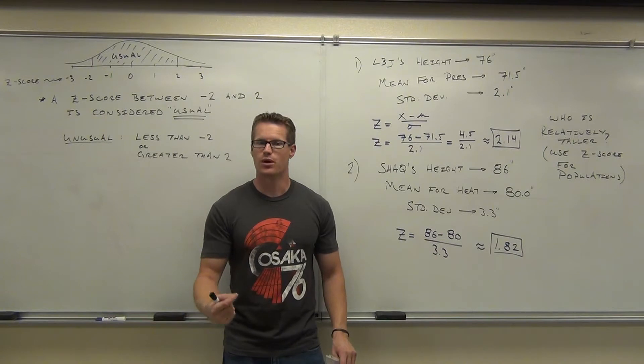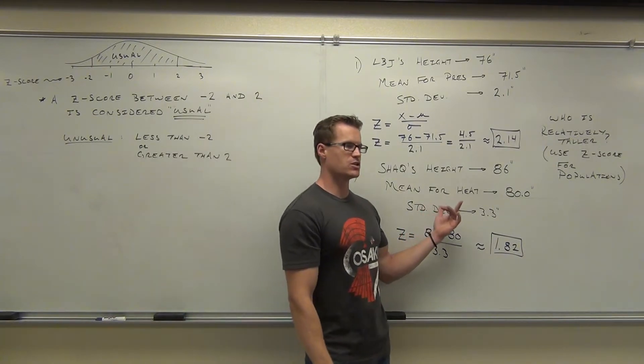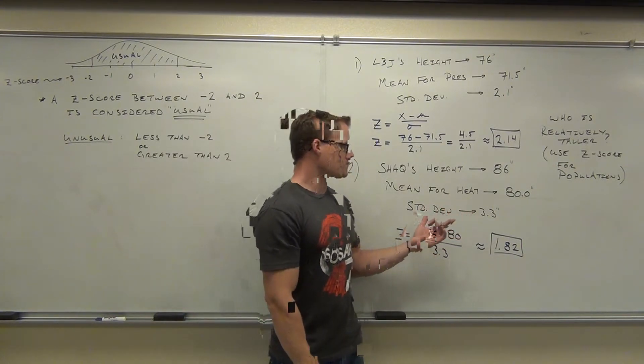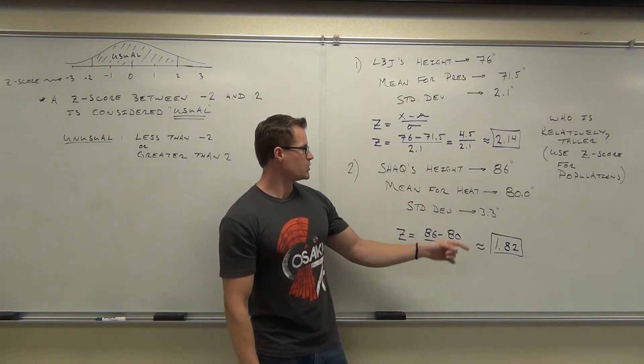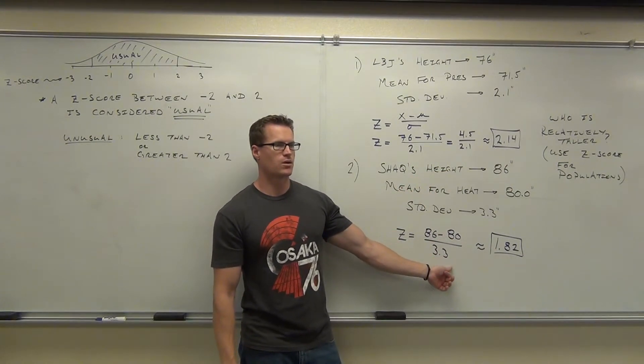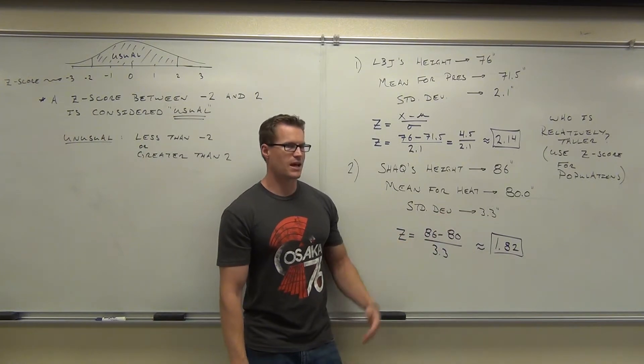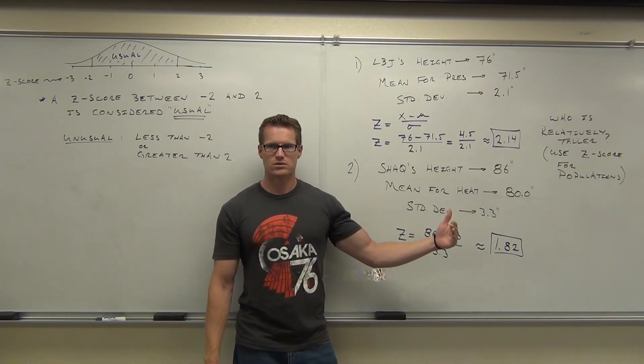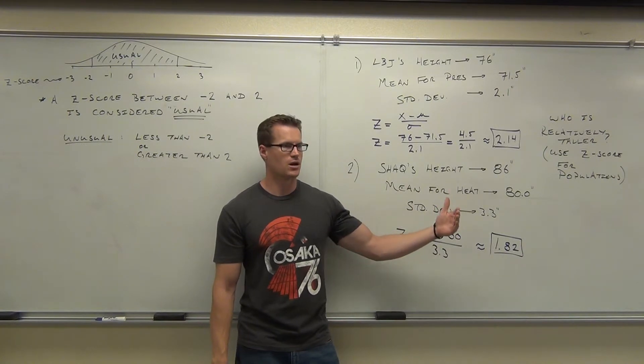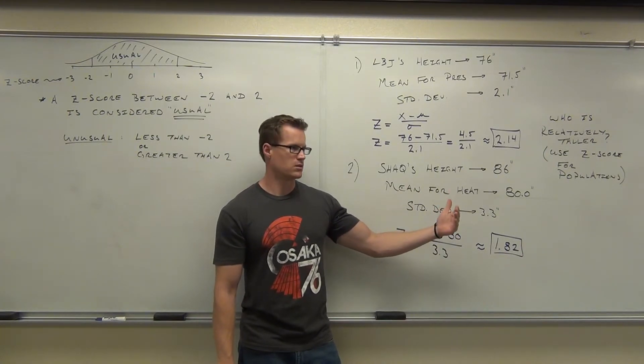It's the number of standard deviations away from the mean. It tells us how usual or unusual a data value is. That's what the Z score is used for. So let's take a look at Shaq and LBJ again. Left side of the room over there. Here, would you say that Shaq has a usual height or unusual height? Why would you say usual? Great, yeah, well, yeah, it's less than two. It's usual. Is it at the close end of being unusual? It's fairly close.